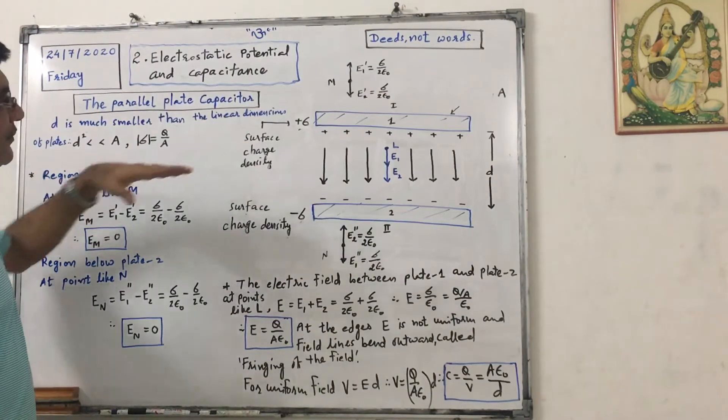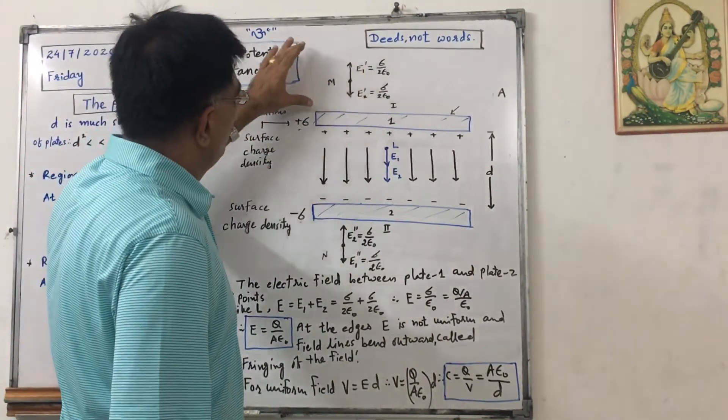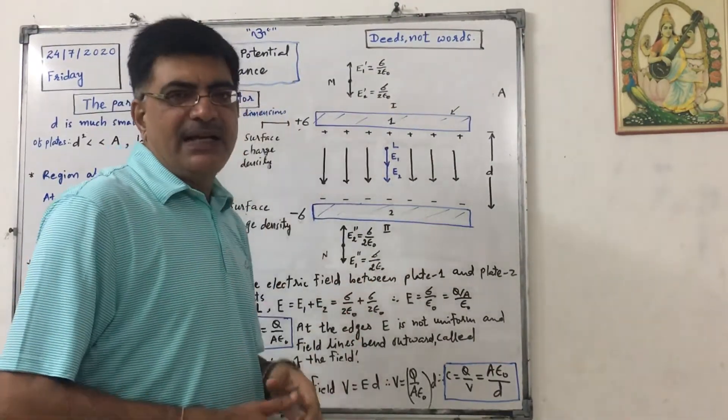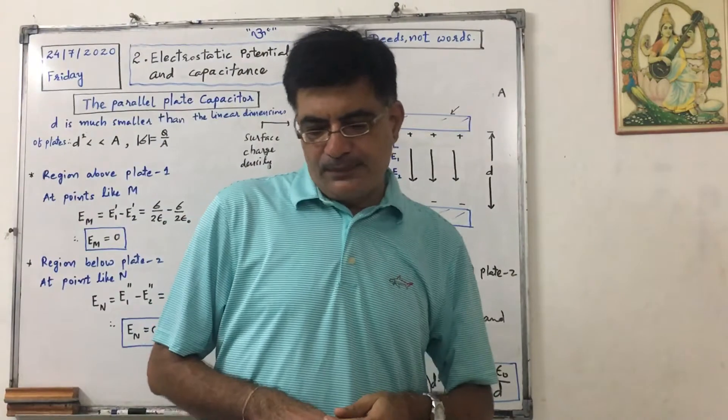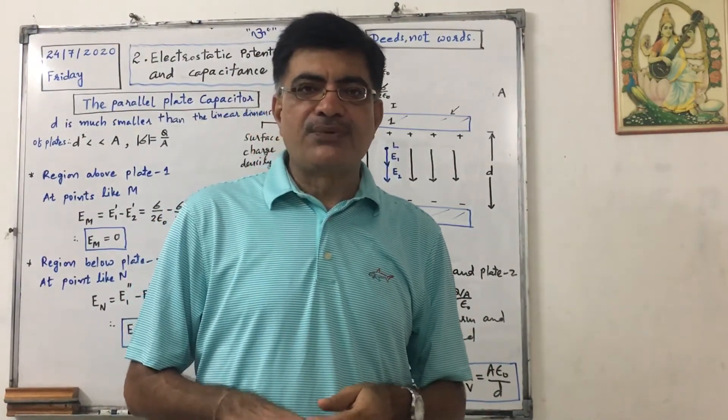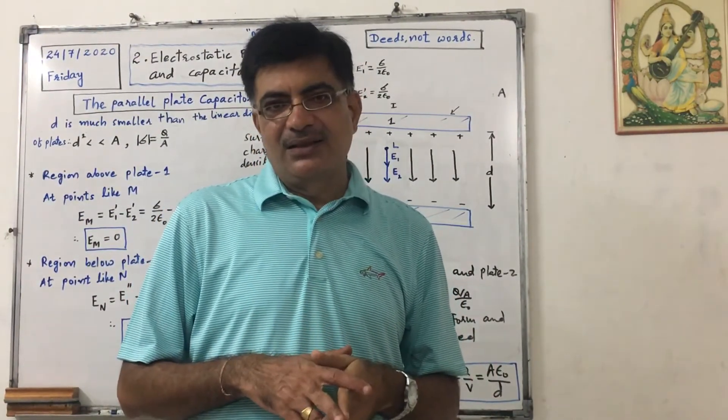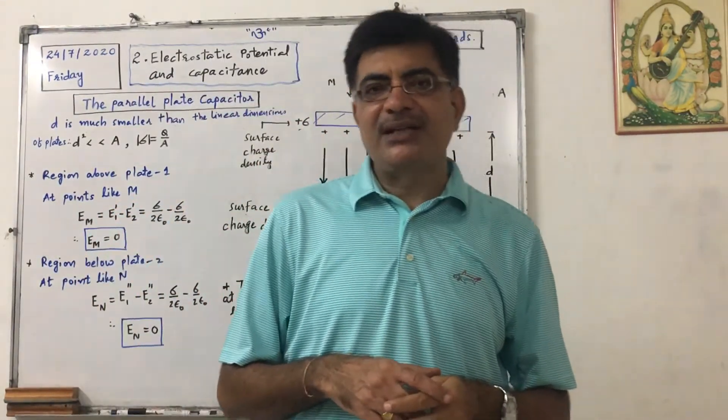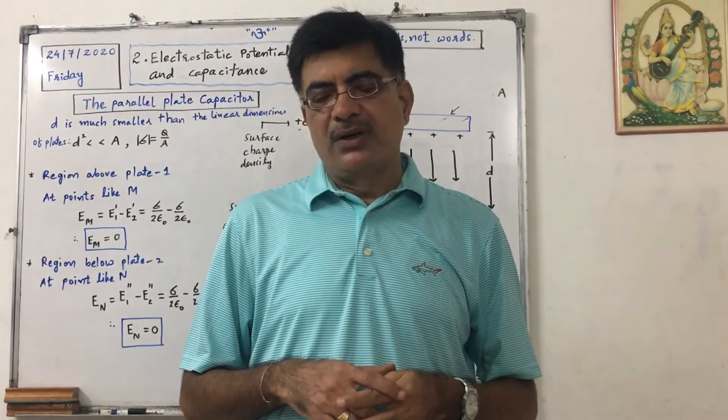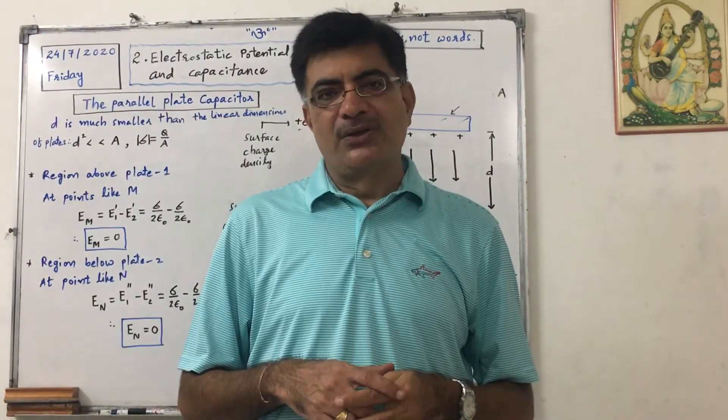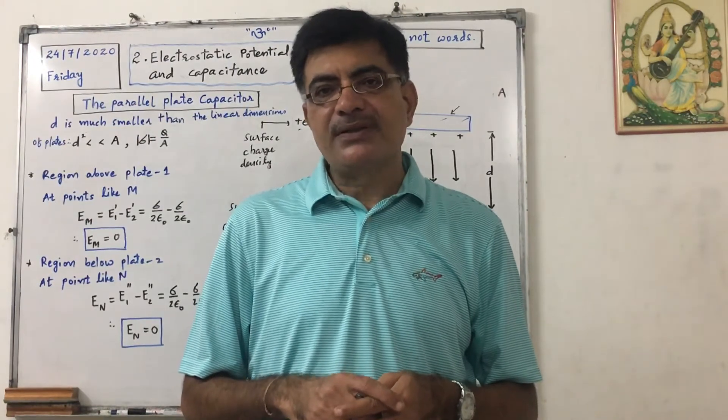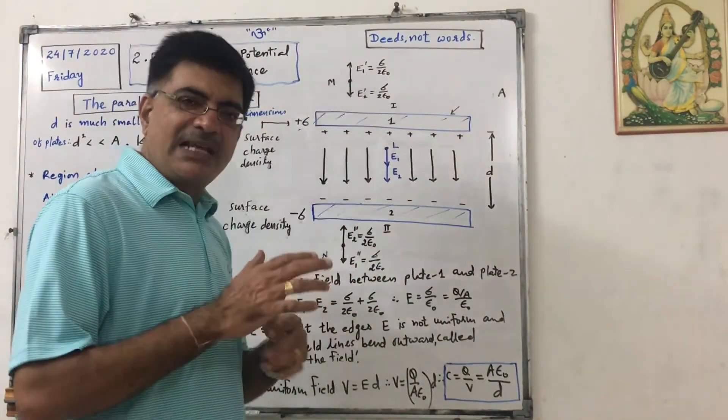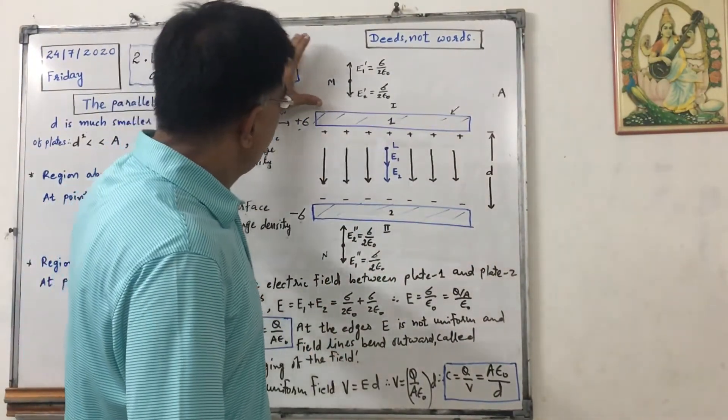So region above plate 1, for all points here I have considered only one point, but we know that we can consider these plates as planes of infinite area. Planes having uniform charge distribution of infinite area, the field produced was sigma upon two epsilon naught. That field does not depend on the distance. So whatever I discuss here for point M, that is applicable to all the points in this area.